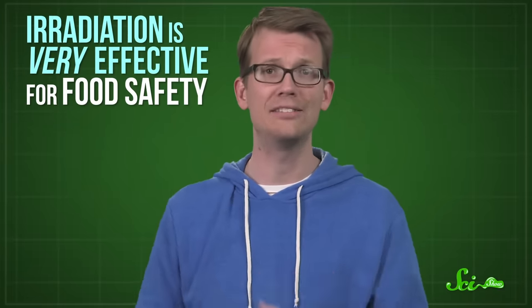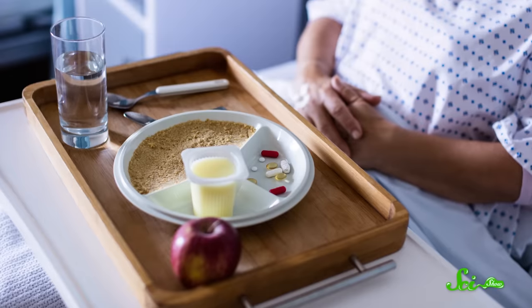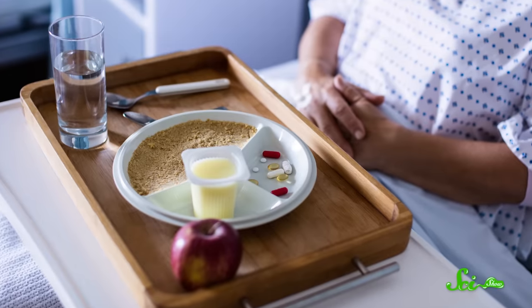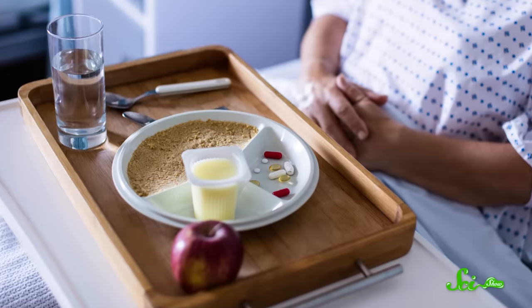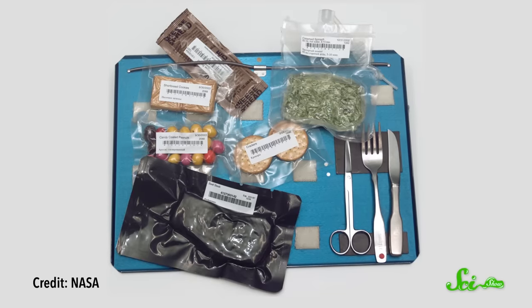If you want to avoid getting sick from something you eat, it might be your best option. The proof is in the pudding. Hospital pudding, that is. Hospitals regularly irradiate food to make sure patients with weakened immune systems don't get taken down by a bit of staph. NASA also irradiates the meat it sends into space to feed astronauts. You know, because nobody wants diarrhea in space? That sounds terrible.